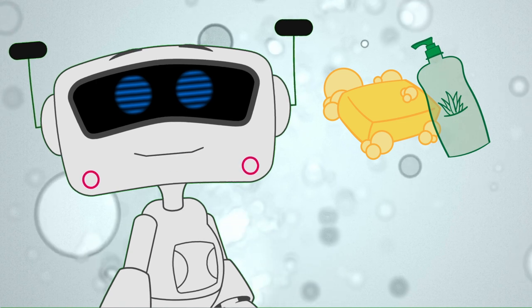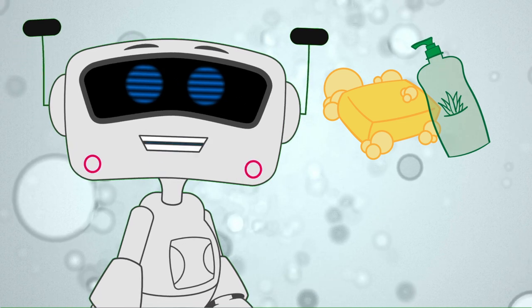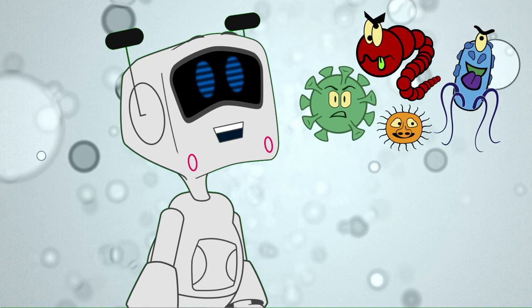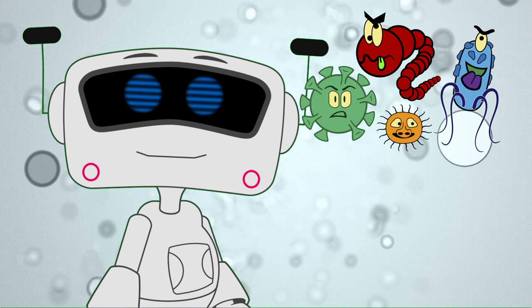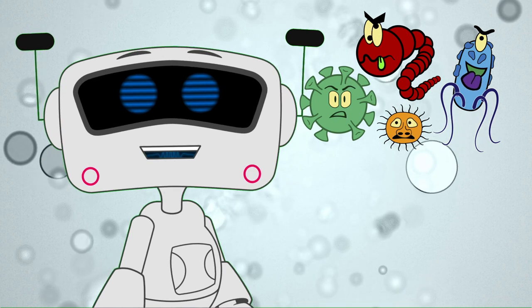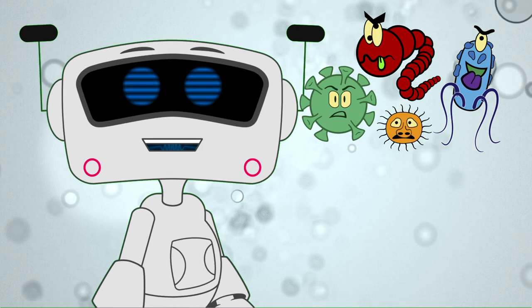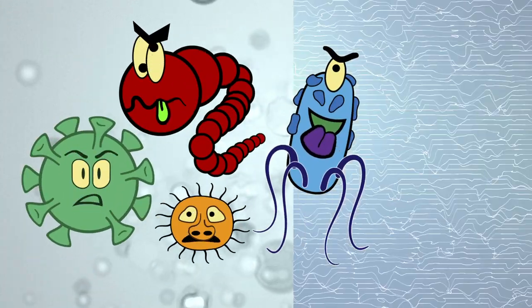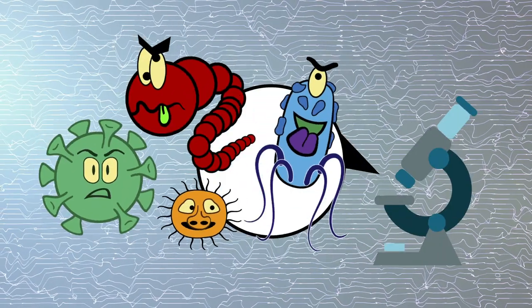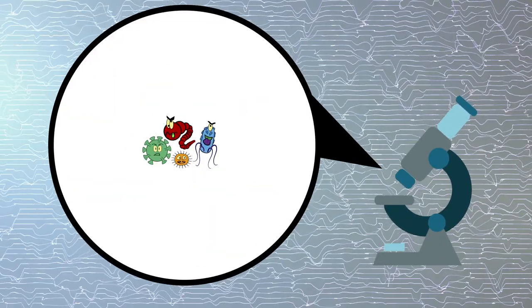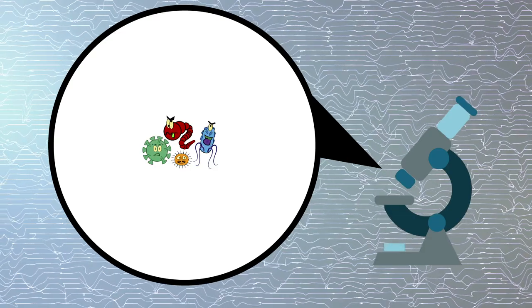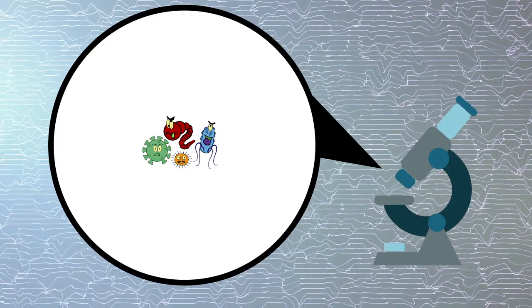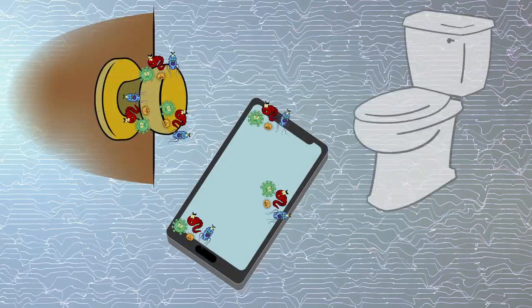Can't we just use hand sanitizer? Well, first we have to talk about germs. Do you know what germs are? Germs are tiny little creatures that can make you sick if they get inside you. Have you ever seen a germ? Probably not — they're really tiny. You need a microscope to see them. But they're there, and they really like to hang out in places that you touch a lot, like doorknobs, cell phones, and bathrooms.